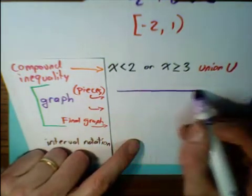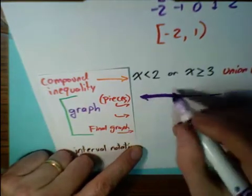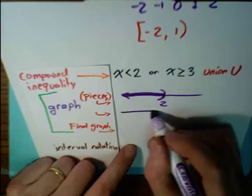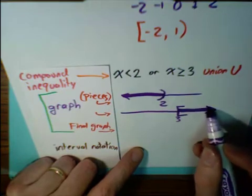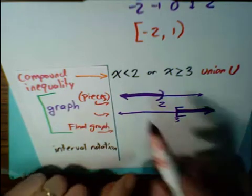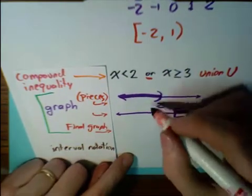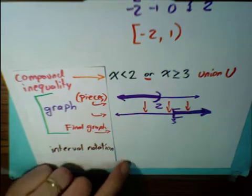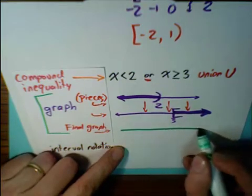For x is less than 2: here's 2, we shade to the left and we're not including 2, so we use a parenthesis. The other piece, x is greater than or equal to 3: here's 3, we use a bracket and shade to the right. Now, how do we combine them? The 'or' says that if it's shaded on one or the other, it's included. So we sandwich these two graphs together — if it's shaded on either one, it will be shaded in our final graph.